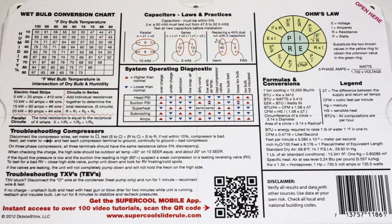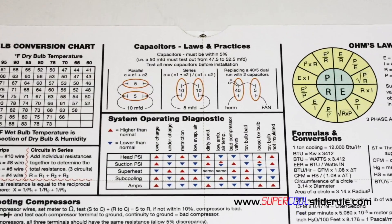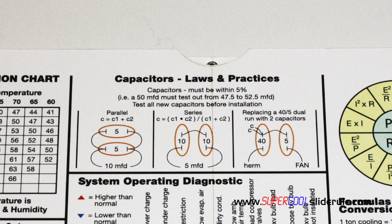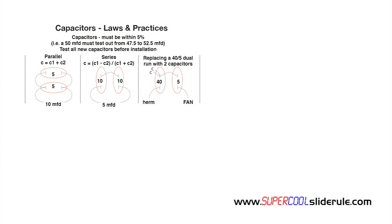Here is the formula on the super cool slide rule that we will use for calculating what the output will be of capacitors when wired in series. We will walk you through the formula using two 10 MFD capacitors. Remember, everything in parentheses must be performed first.